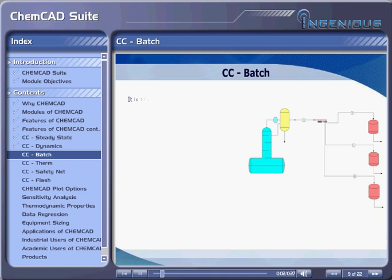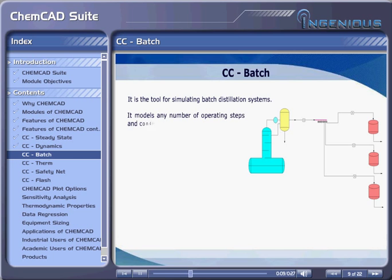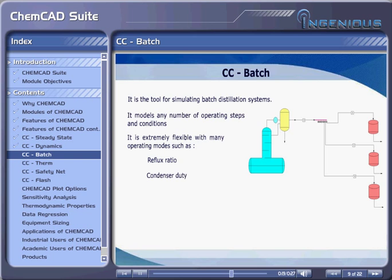CC Batch. It is a tool for simulating batch distillation systems. It models any number of operating steps and conditions. It is extremely flexible with many operating modes such as reflux ratio, condenser duty, and boil-up specification. It is ideal for users who want to design or rate a batch distillation column.